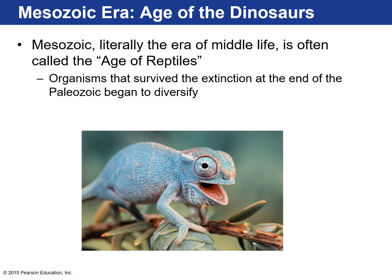But what the Permian extinction led to was the evolution of organisms that made it through that bottleneck and were then allowed to diversify. One of those organisms was reptiles — the first fully land-based organisms. Amphibians are 'halfers' — they have to lay their eggs in water, become tadpoles, live essentially as fish for a portion of their life, then come out of the water. Reptiles, by contrast, lay an amniotic egg that hatches and the young are on land essentially from the start. So the Mesozoic is often called the age of reptiles — this is when reptiles diversified.